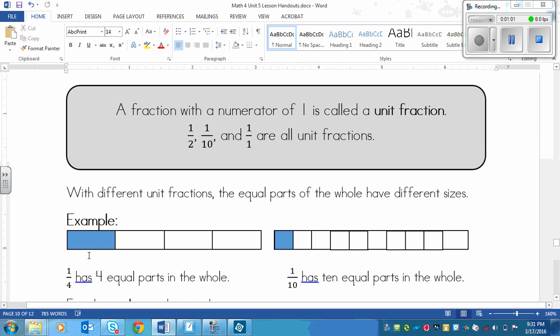But one represents one quarter. So it's broken up into four equal pieces. And one is colored. And then the other one is broken up into 10 equal pieces. And one of them is colored.